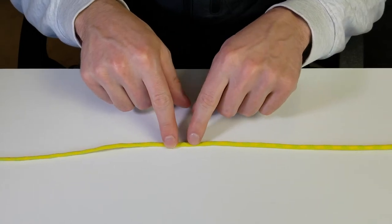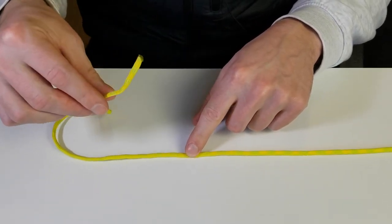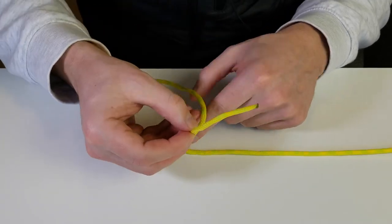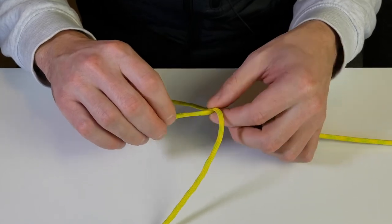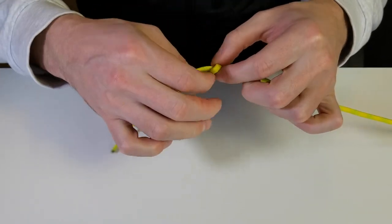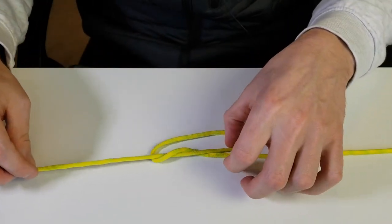Let's say we want the knot to be about somewhere around here. All we're going to do is take our tag end here and simply form a loop. Very simple, just a little loop like that. Then all we're going to do is take our line and put it through and we have a simple overhand knot right there.